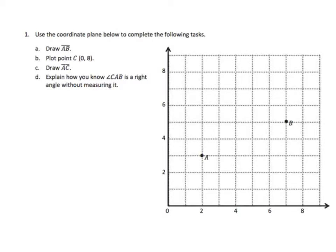For problem number one, we've got a few tasks here. It says, use the coordinate plane below to complete the following task. First task is to draw a line segment. Notice that it's a line segment because we don't have any arrows in this line that's over the AB. So we have two endpoints, endpoint A and endpoint B.